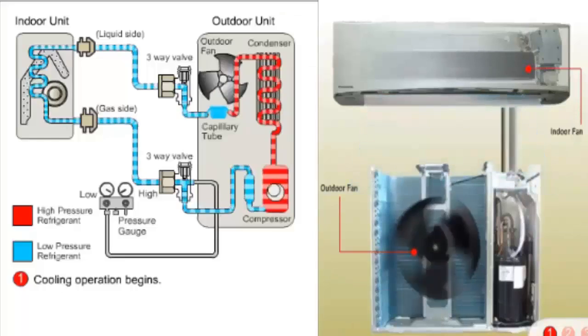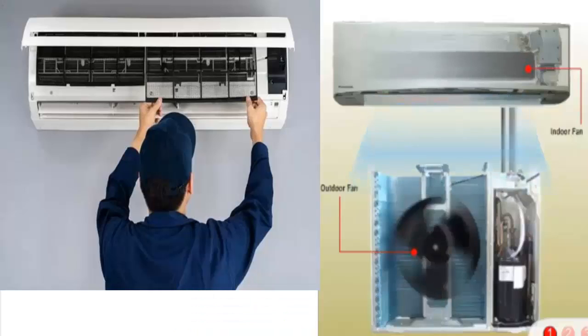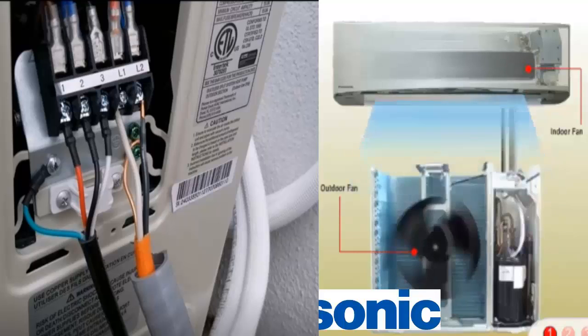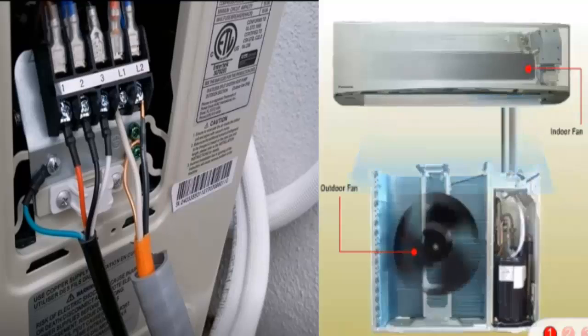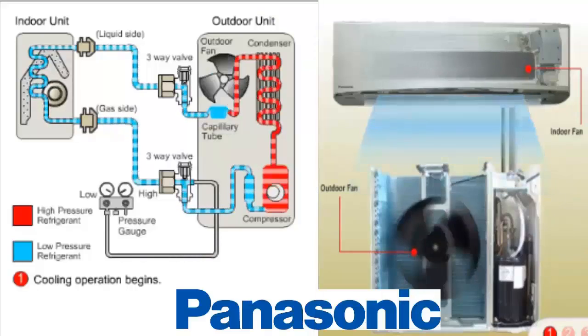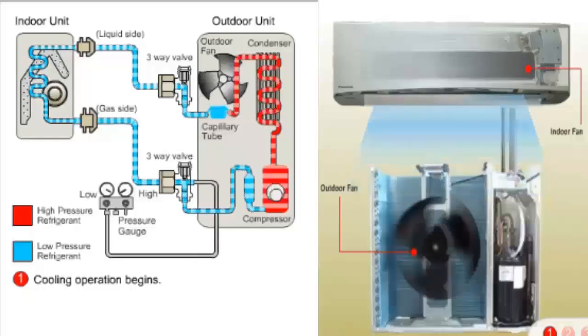Troubleshooting and solutions: Check the power supply, ensuring it is within the specified values by the manufacturer. Verify internal wiring, the distribution board, and circuit protection to ensure proper voltage. Conduct a visual inspection of the outdoor unit, especially the condenser — ensure it is clean, without obstructions, and that the fan is functioning correctly. A dirty or obstructed condenser can cause overpressure problems.